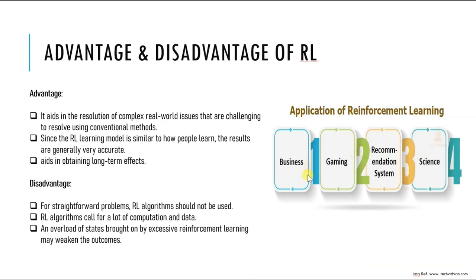Another application is gaming. Reinforcement learning has seen great success when applied to chess, Go, and poker. It has been used to develop game-playing agents that can play video games at a superhuman level and can even beat human players.